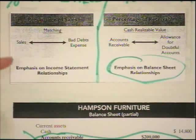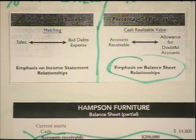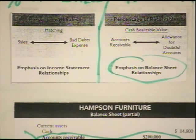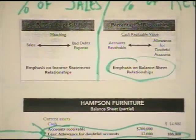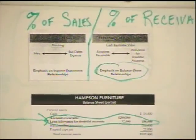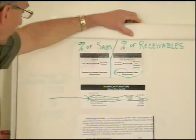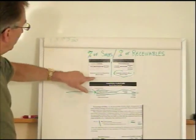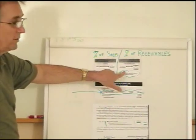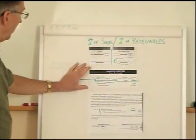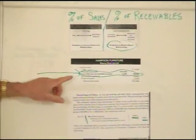These two methods can also be called the income statement method and the balance sheet method, based on what we calculate our percentages from. Since we calculate our percentages off of sales, hence the income statement method, and we calculate our percentage off of receivables, hence the balance sheet method. Before we move on to the calculations, let's take a look at the presentation of this allowance for doubtful accounts.